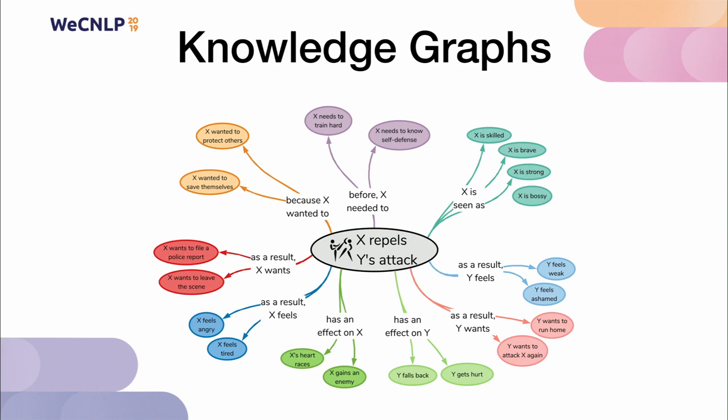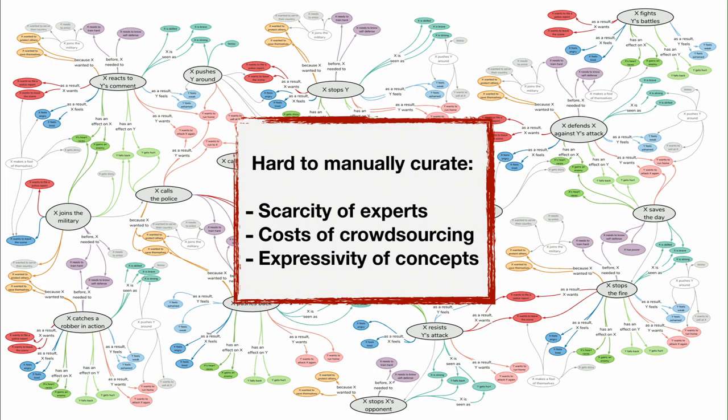I want to start off by saying that knowledge graphs are a fairly ubiquitous tool that are used in a variety of AI tasks to provide real-world information to intelligent agents. But in order for them to be useful, they have to be able to cover the wide variety of concepts that could be useful for a downstream use case, which means they may need to be developed at an incredibly large scale.